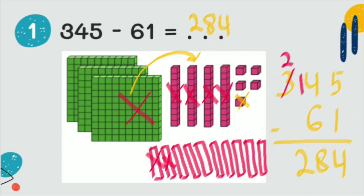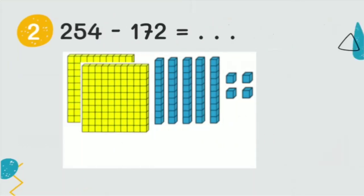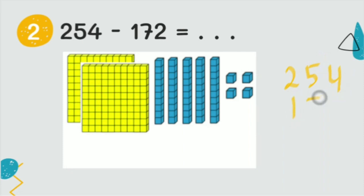Next I have another example using a picture: two hundred fifty-four minus one hundred seventy-two. Again we start from the ones. Four minus two — we cross two ones. Now we have two ones.